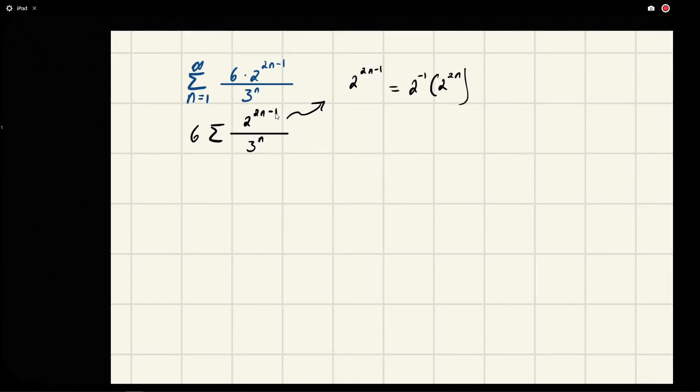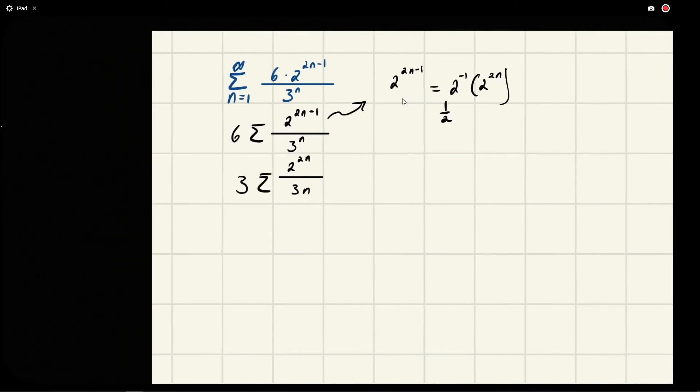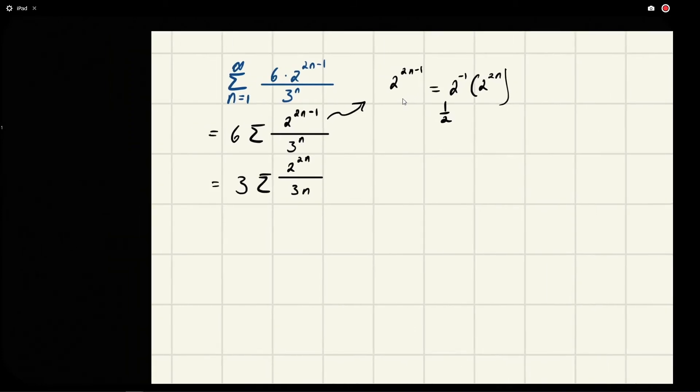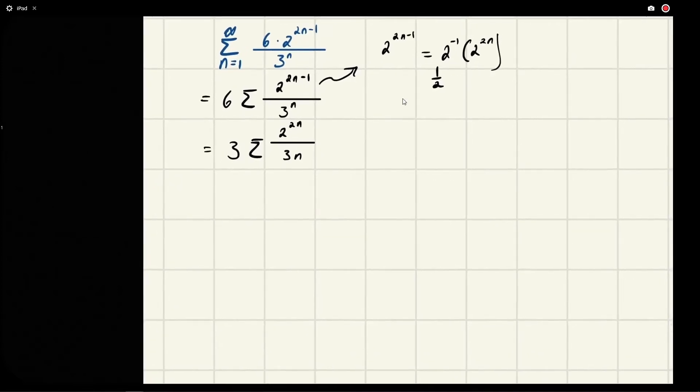Right, that's the same thing. If we were to multiply them, they have the same base, so we just add the exponents. And 2 to the minus 1 is like one-half, and so that's the same thing as just dividing our six out here by half. So we'll be left with 3 times 2 to the 2n over 3^n.